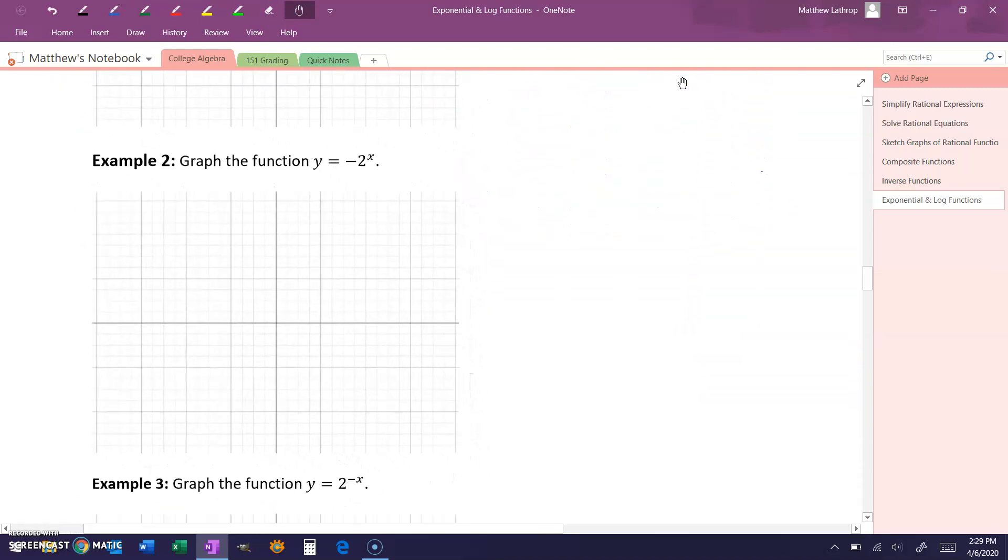Now in example two, we have y equals negative 2 to the x power. Again, we can identify our value for a here is 2, which is greater than 1, meaning our graph will again be increasing. And what we have applied is something of the form y equals the opposite of f of x, meaning we have a reflection over the x-axis.